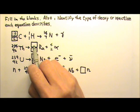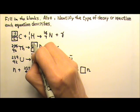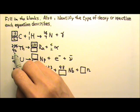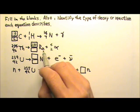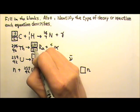So 234 equals this plus 4, so this must be 230. And this is 90 equals this plus 2, so this is 88.